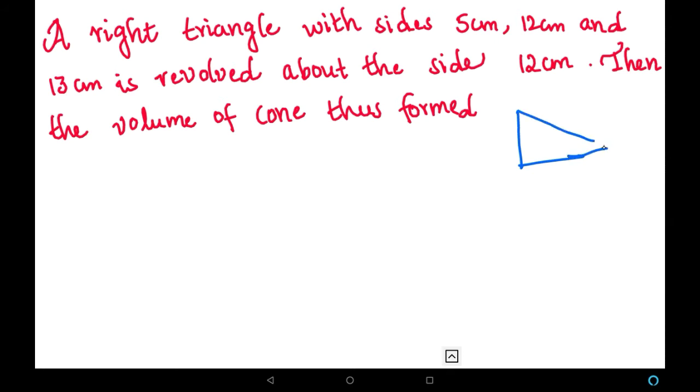Here the hypotenuse is 13 cm, the height is 12 cm and the base is 5 cm. This right angle triangle is revolved from the height and forms a cone. So we have to find the volume of this cone.